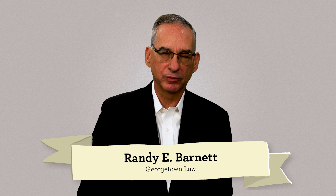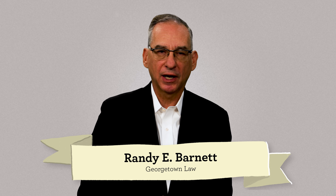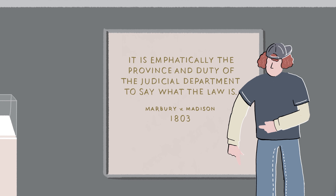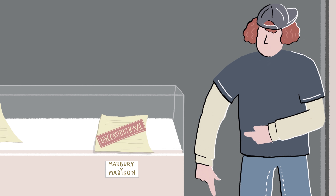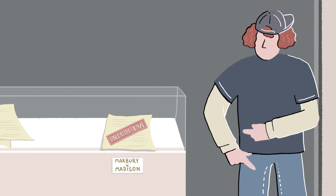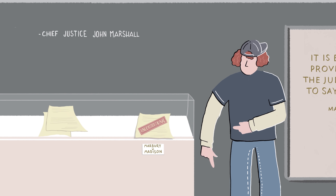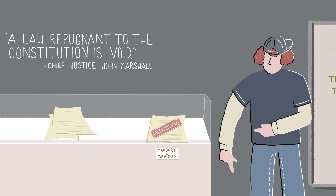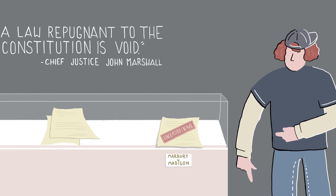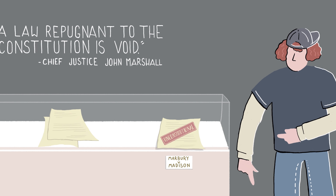There are many cases before Marbury in which the Supreme Court assumed that in a conflict between the higher law of the Constitution and a statute, a statute would be null and void if it conflicted with that higher law. Marbury vs. Madison simply represents the first time it finally held that a federal statute did in fact exceed the powers of Congress and therefore was unconstitutional and void. It was simply the first occasion on which that power was used — not the first time that power had been recognized by the Supreme Court.